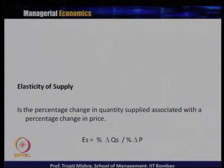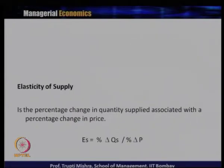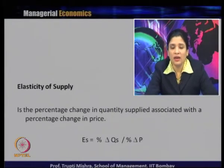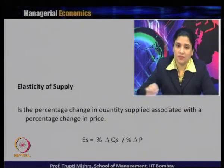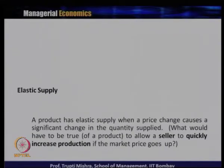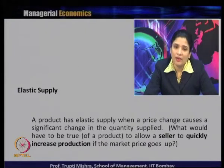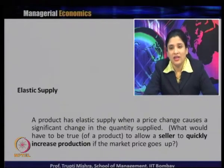Elasticity of supply is calculated as the percentage change in quantity supplied associated with the percentage change in price. Here, quantity supplied is the dependent variable and price is the independent variable. A product has elastic supply when a price change causes a significant change in quantity supplied — meaning the percentage change in QS is greater than the percentage change in price.